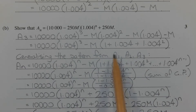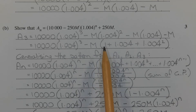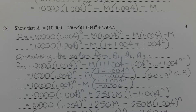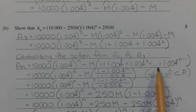From A3 we can see a pattern forming — what's in brackets is a geometric series where the first term is 1 and the common ratio is 1.004. We can generalise the pattern from A1, A2, and A3 to come up with an expression for A_N. So A_N is equal to 10,000 times 1.004 to the power of N, minus M times (1 plus 1.004 plus 1.004 squared plus ... plus 1.004 to the power of N minus 1).